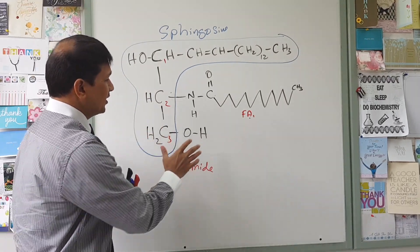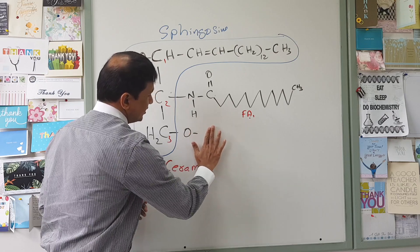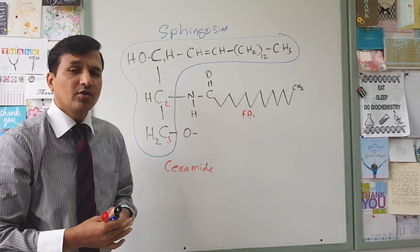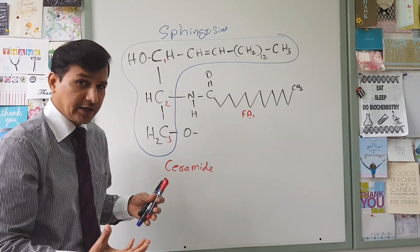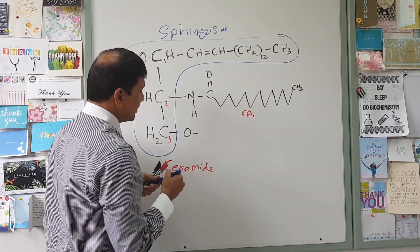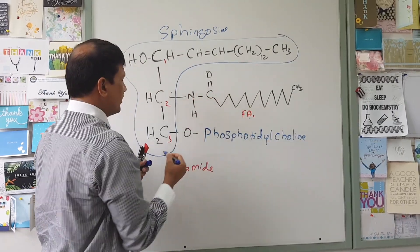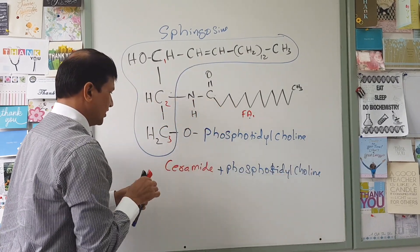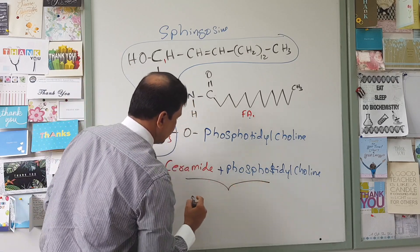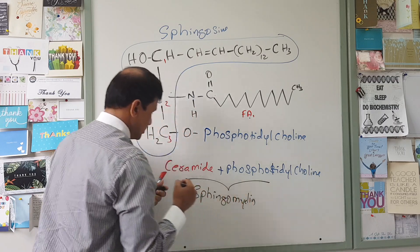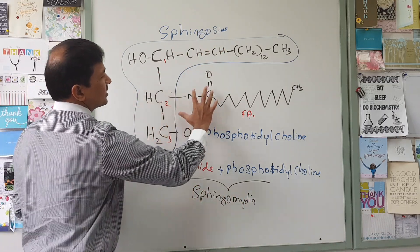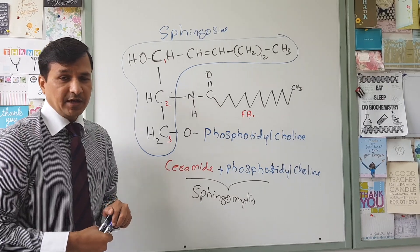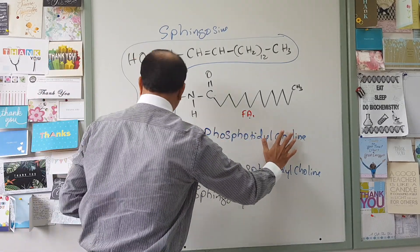Now to this ceramide, depending on what functional group you replace the H with and attach here, that kind of sphingophospholipid is what you get. If I attach phosphatidylcholine — that is ceramide plus phosphatidylcholine — that is nothing but sphingomyelin. So sphingomyelin is sphingosine plus fatty acid plus phosphatidylcholine. Sphingomyelin is rich in neuronal membranes.